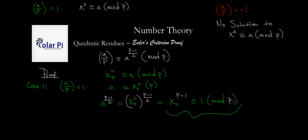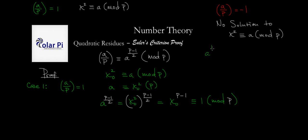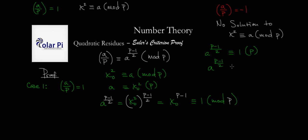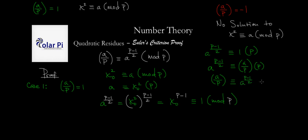We know this last part by Fermat's little theorem, and it means that a to the power of p minus 1 over 2 is congruent to 1 mod p. But then, that 1 here is the same as the Legendre symbol a over p in this case. So we can say a to the power of p minus 1 over 2 is congruent to a over p mod p, or equivalently, a over p is congruent to a to the power of p minus 1 over 2 mod p.